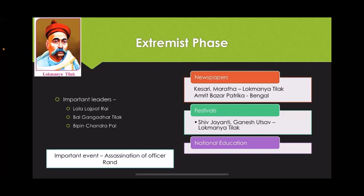An important event in this phase was in 1897. In Pune, the epidemic of plague had spread on a large scale and hundreds of people died. An officer named Rand was appointed, and oppressive measures were adopted to search out plague patients. As a revenge, the Chapekar brothers assassinated Rand. The government tried to connect Lokmanya Tilak to this conspiracy, and after being unsuccessful, imprisoned Tilak with revenge.